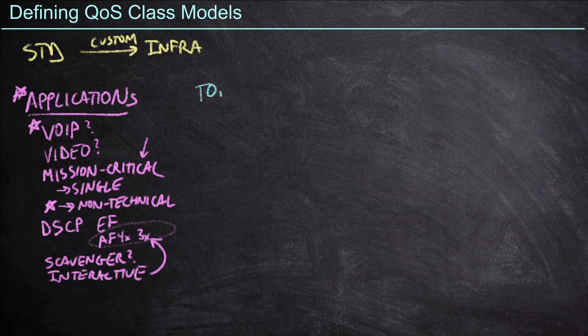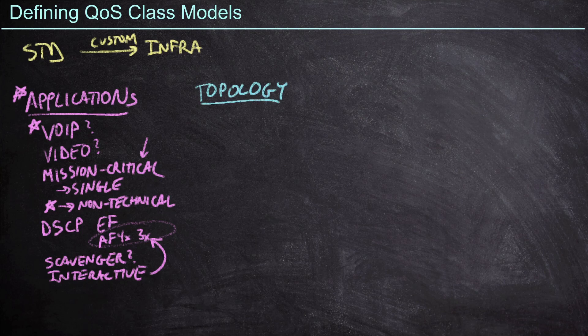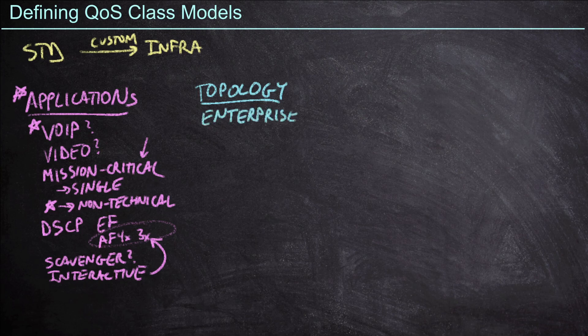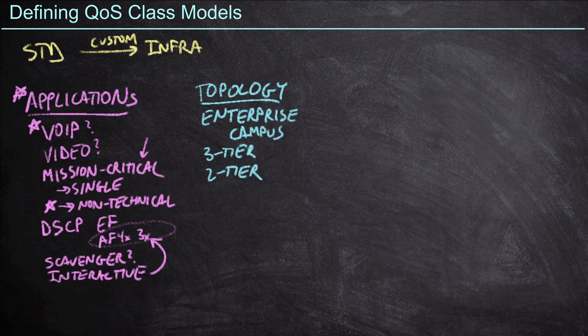Now, the next thing we need to consider is the topology of our network. Because again, not every network is created the same. And so we might try to adhere to a standard like the enterprise campus architecture. That's a great standardized topology that Cisco has created. And then we talk about three-tier models and two-tier models and all kinds of different options there. And do we have layer three to the edge or layer two to the edge? But it goes beyond this as well. Do we have a wide area network? Do we have lots of different sites or just a few different sites? And are circuits large or are they small? Are they small enough in parts of the world where we need to consider some of these link efficiency mechanisms we've discussed?